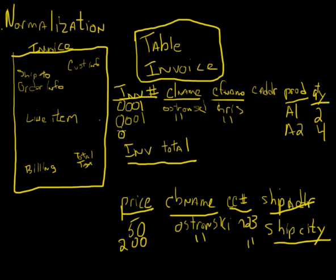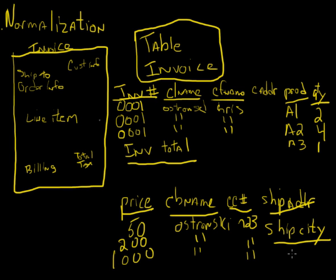If I buy a third item, invoice 0001, same last name, same first name, product A3, quantity one, price $1,000, billing name, credit card information, ship-to city — all duplicated over and over again. This makes it really inefficient to store information in an Oracle database this way, or any relational database for that matter.